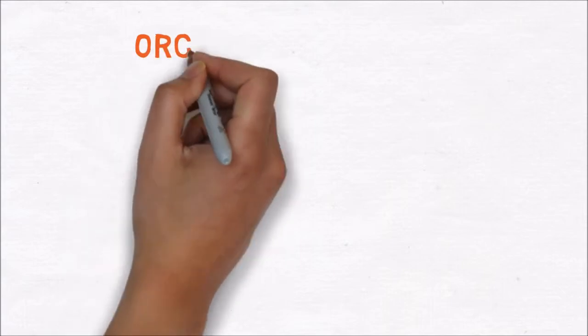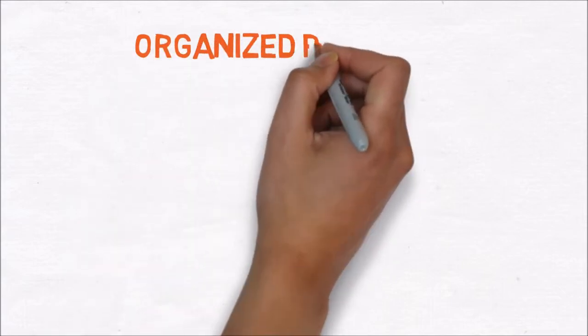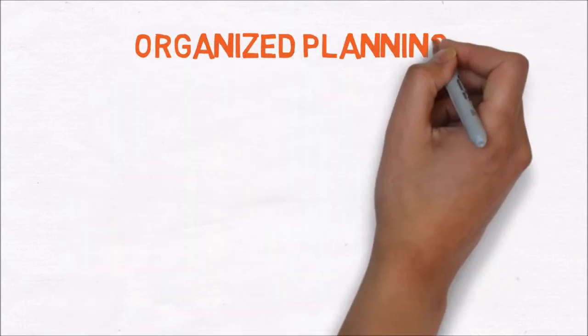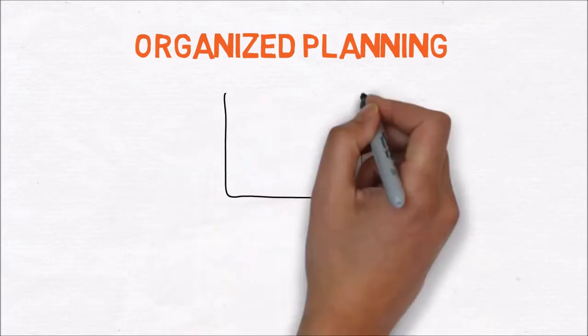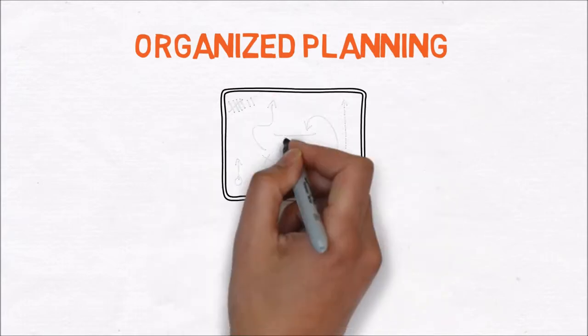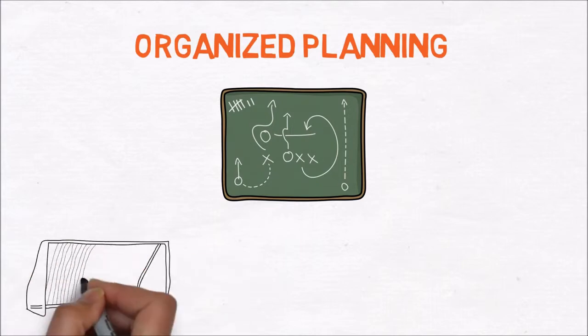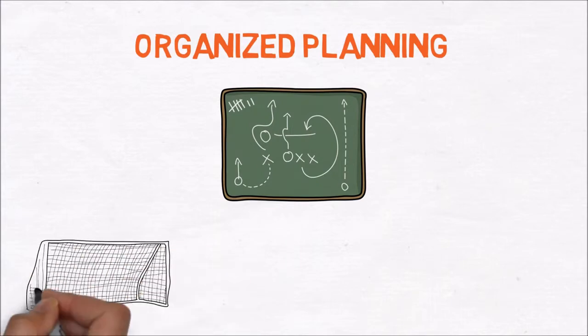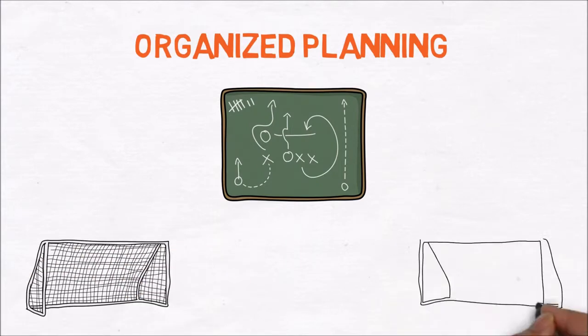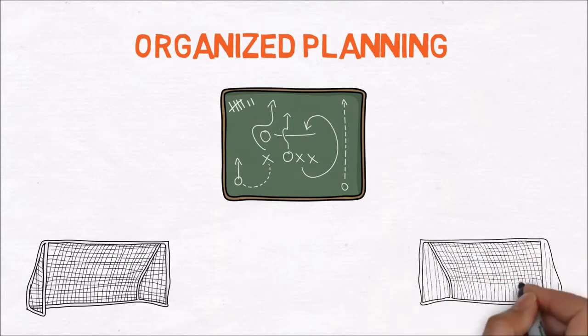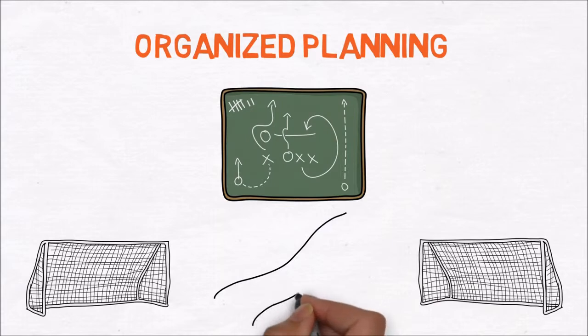The sixth step is organized planning. If you really want to succeed and reach that burning desire, you need a good plan. Take your time to make a plan and write it down. Divide your plan into workable goals. Remember to take action and act with persistence. Most people are good starters but poor finishers. Don't be one of them and be persistent.